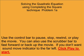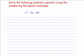I'm going to solve the following quadratic equation using the completing the square technique. The expression is actually equal to zero: x squared minus 3x minus 10 equals zero.